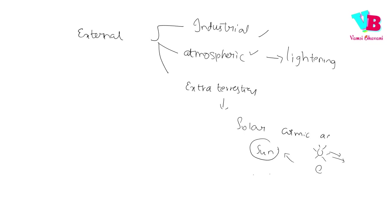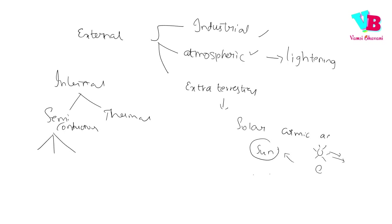Now for internal noise, we have two broad classifications. The first one is thermal noise and the second one is semiconductor noise. Under semiconductor noise, we have three types: shot noise, transit time noise, and flicker noise.